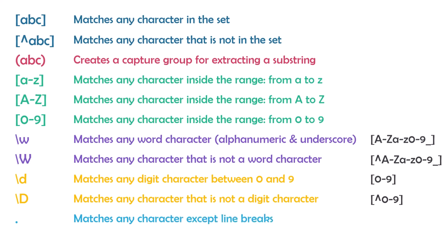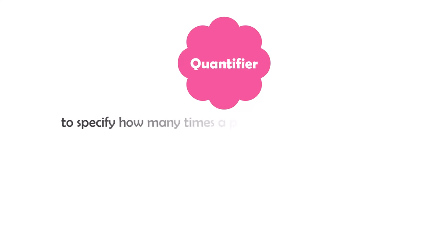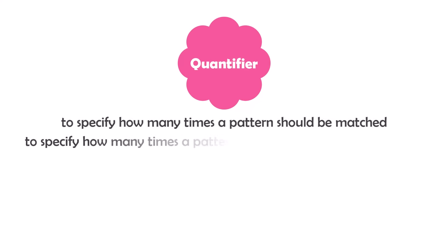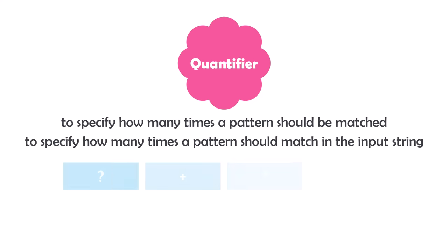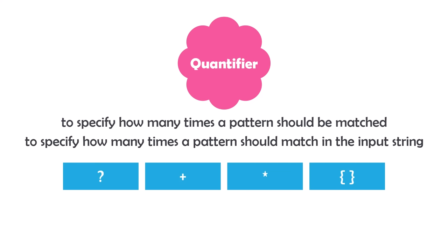Let's now check the next patterns, which are called quantifiers. Quantifiers are used to specify how many times a pattern should be matched — in other words, how many times a pattern should match in the input string. We have the following four quantifier patterns. Let's start with the first one: question mark.